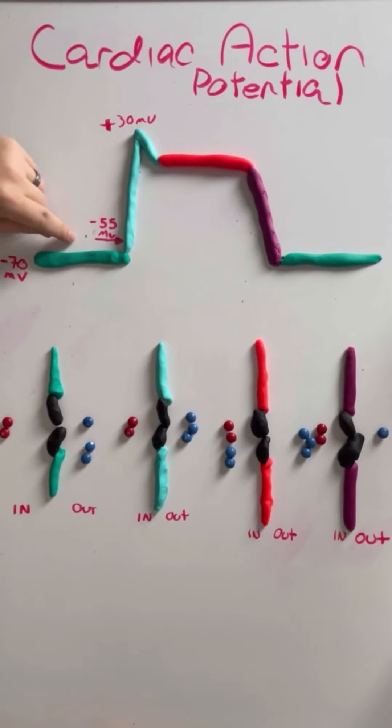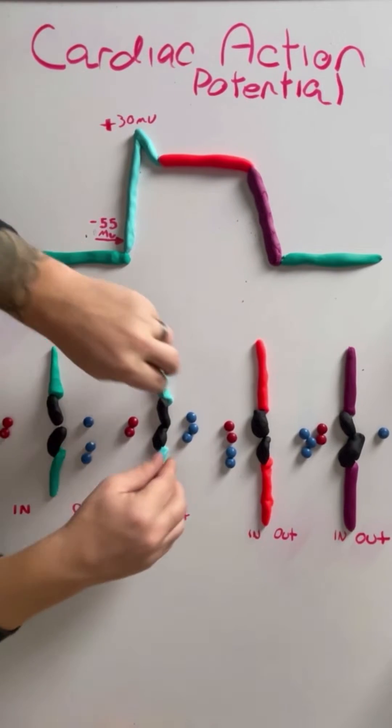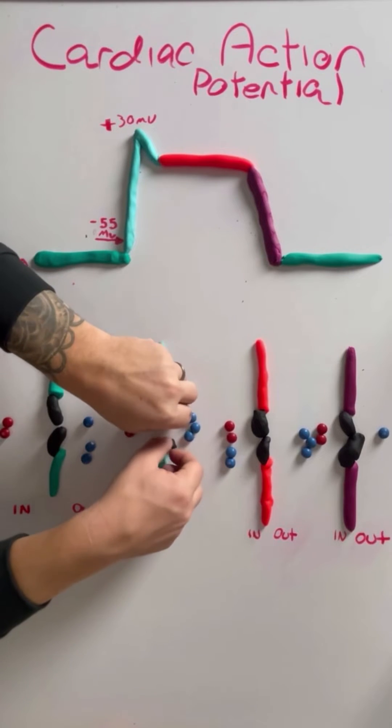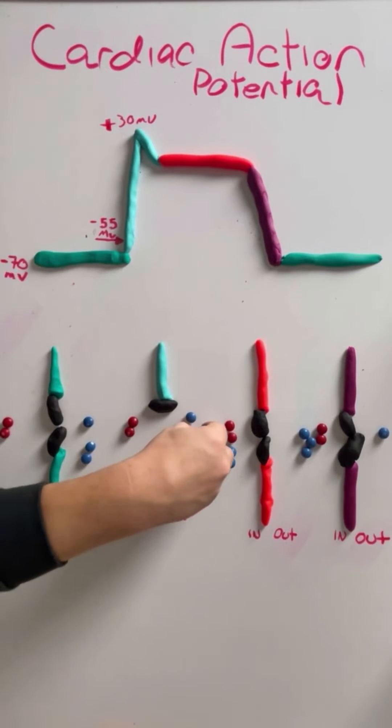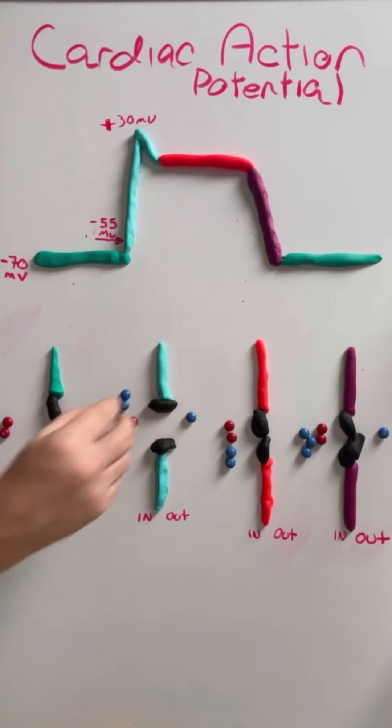And then once action potential is gonna occur, we're stimulated, our nerves are stimulated, whatever the case may be, what's gonna happen is that we're going to open this sodium channel, and by opening this sodium channel, it's gonna allow sodium to move from the outside of the cell to the inside of the cell.